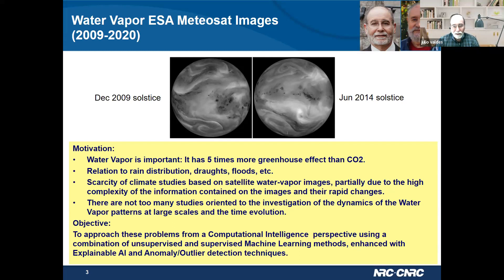At the same time, there were not too many studies oriented to the investigation of the actual dynamics and the patterns at large scales and how these patterns evolved with time. So we tried to approach these problems from a computational salience perspective, using a combination of machine learning methods, including the use of explainable AI and anomaly and outlier detection techniques.